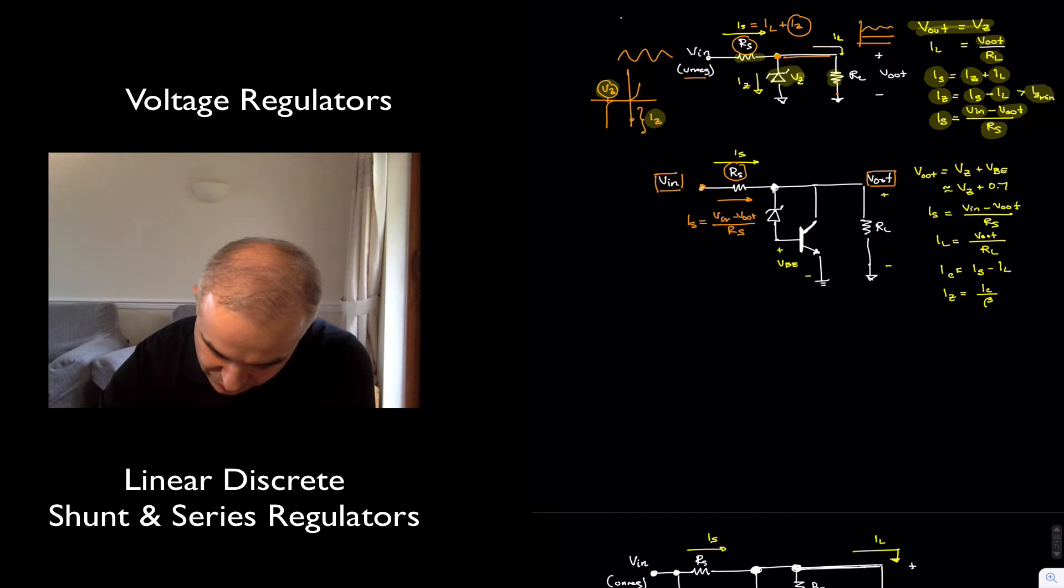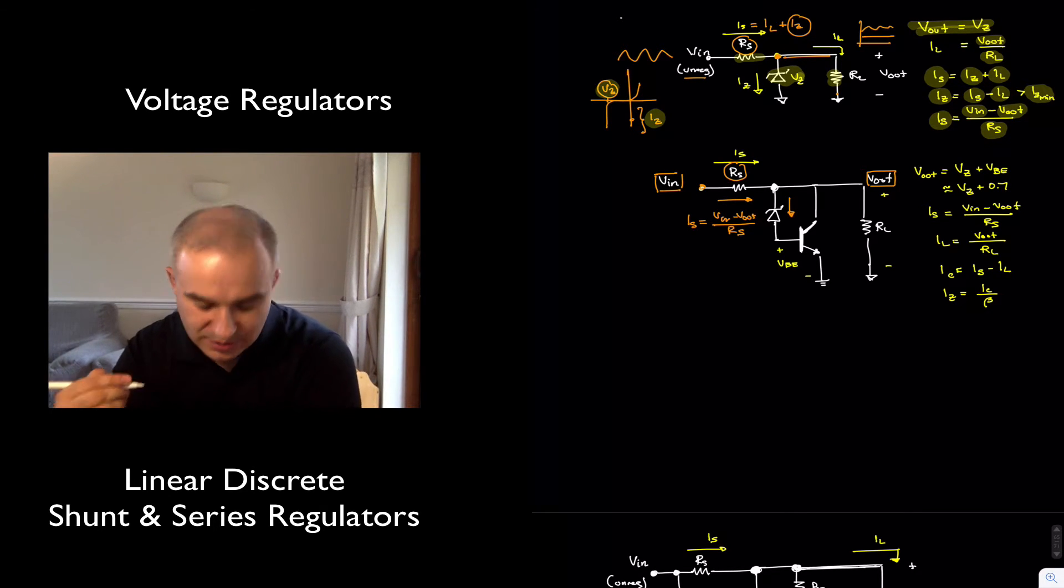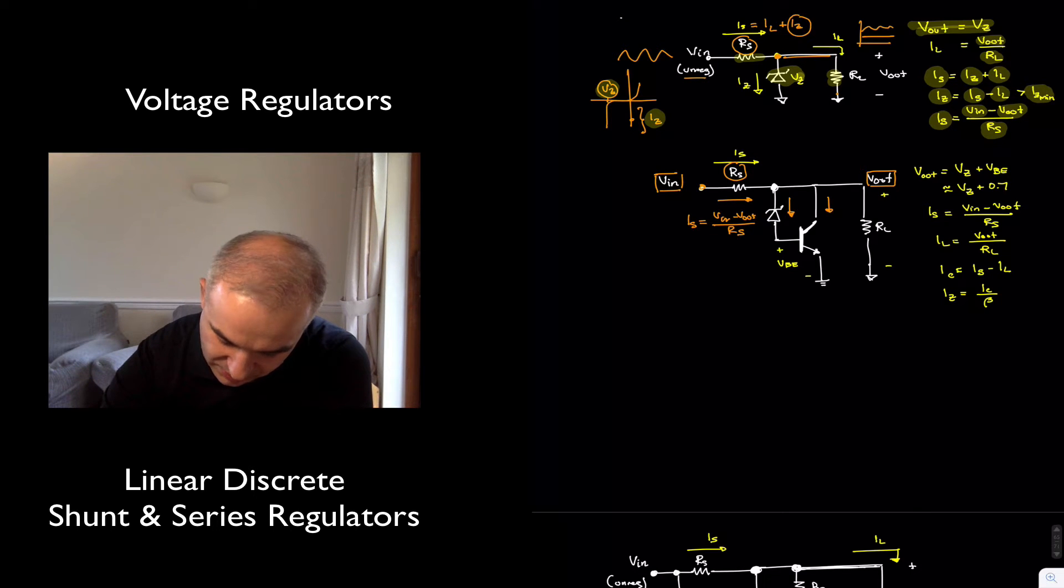And this current then is going to need to be enough to bias the ZENER diode, collector current, and load current. Okay? Now,